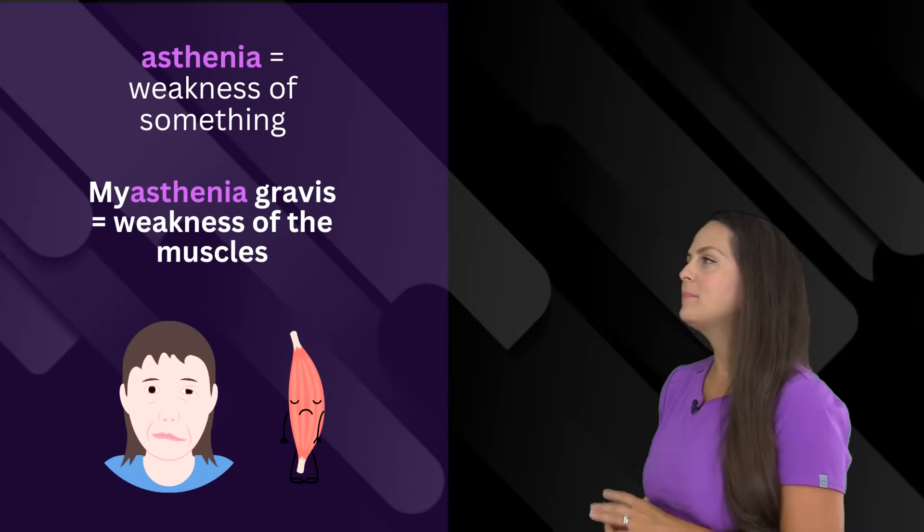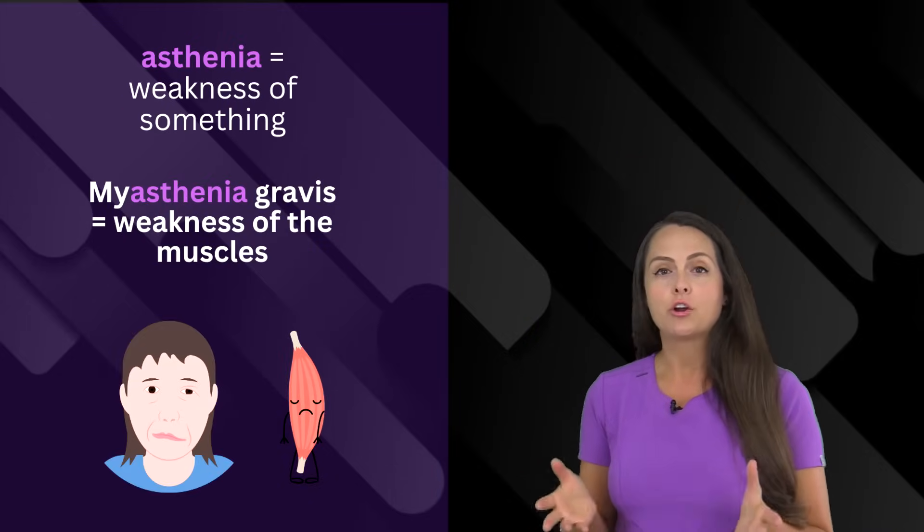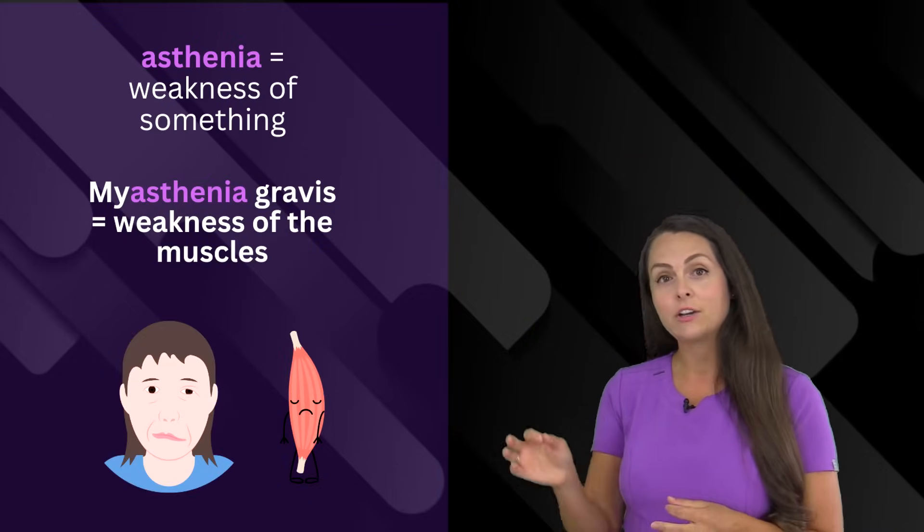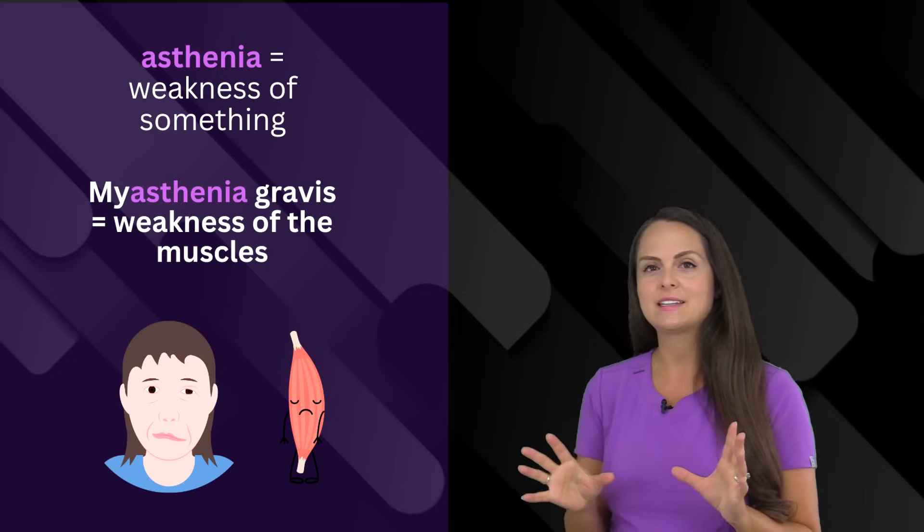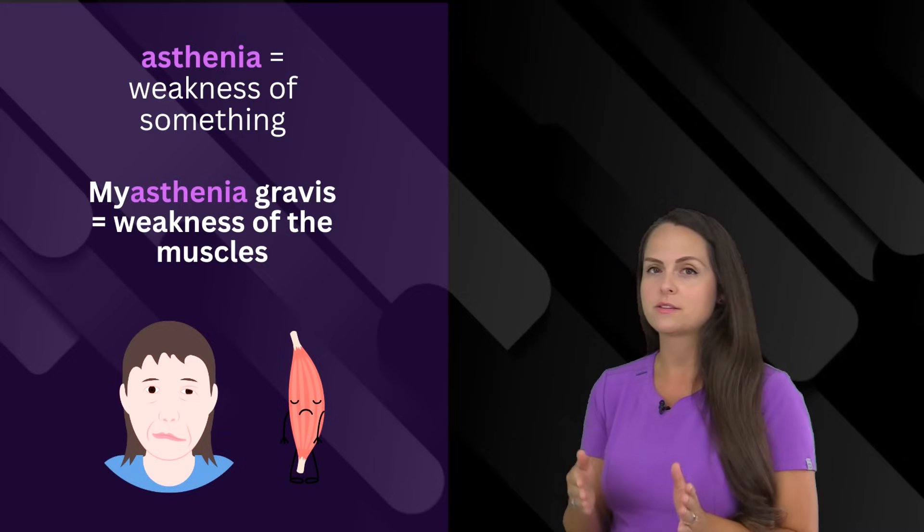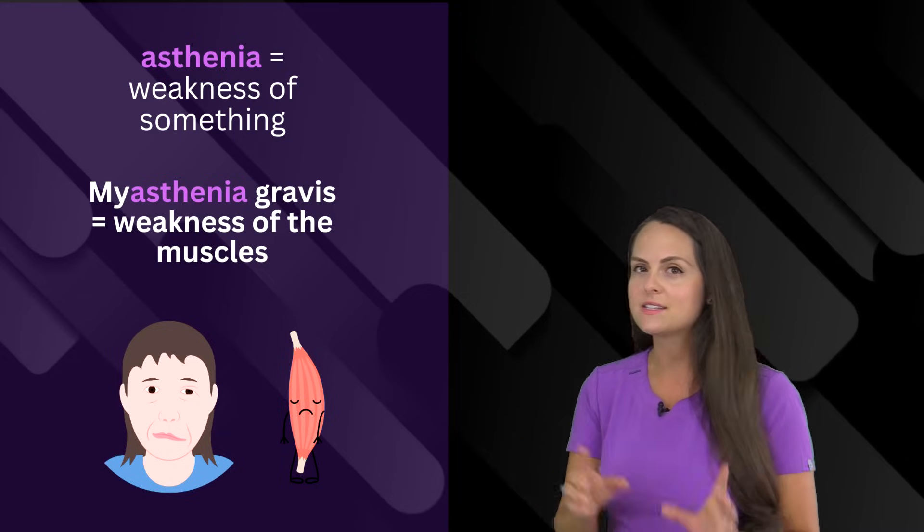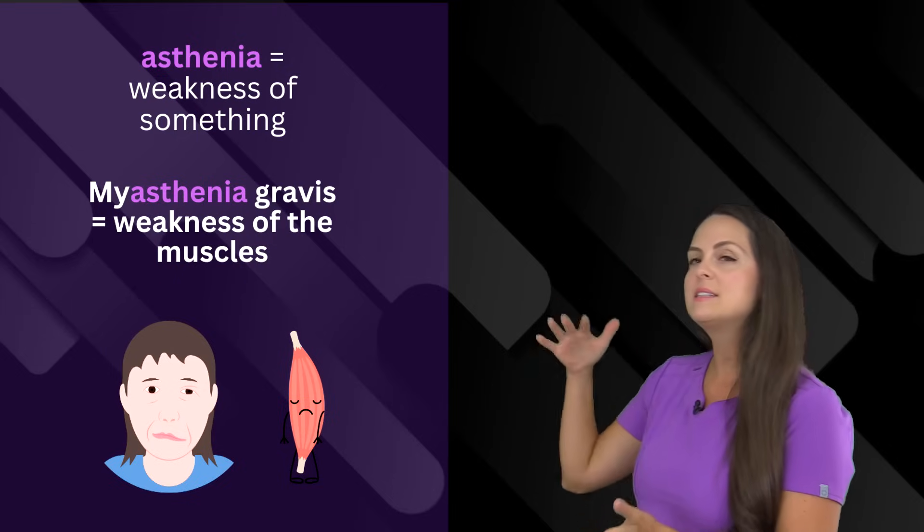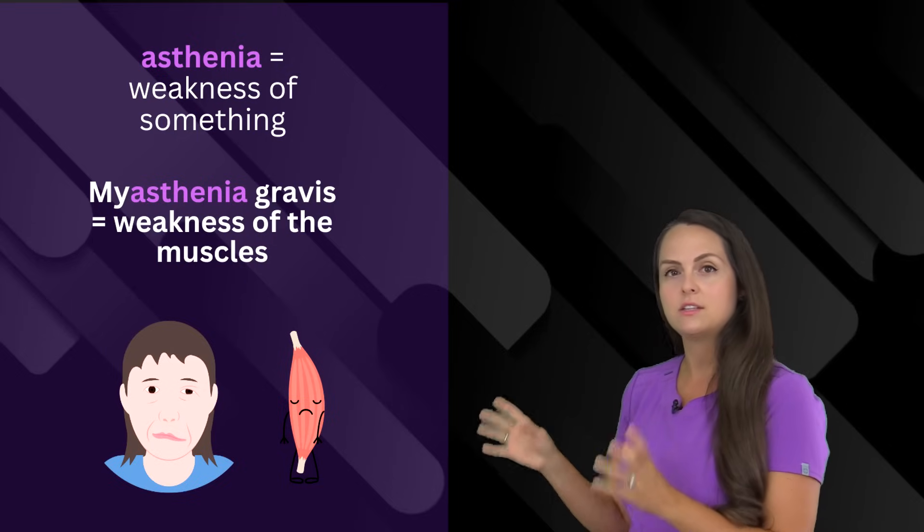Next up is asthenia. This means weakness of something. There is a neuro condition known as myasthenia gravis. And when you take all of that together, like myo, the prefix, that means muscle, asthenia means weakness of something, and then gravis means serious. We have a serious muscle weakness condition.